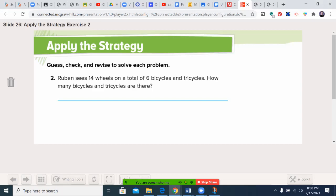Let's give you another practice. Ruben sees 14 wheels on a total of six bicycles and tricycles. How many bicycles and tricycles are there? Go ahead and pause the video. Don't forget to guess, check, and revise. Welcome back. The answer is four bicycles and two tricycles.